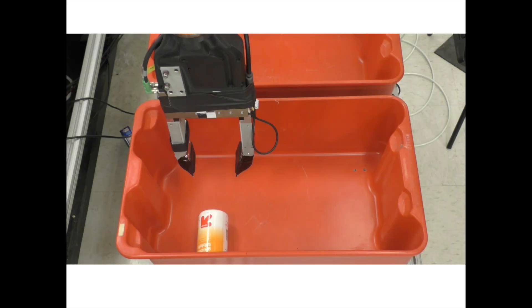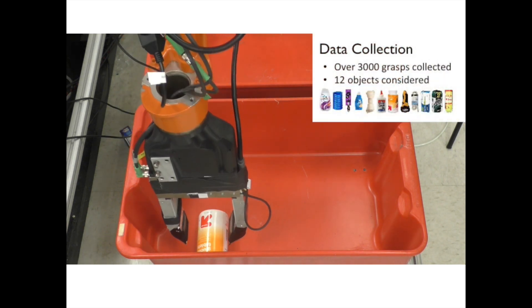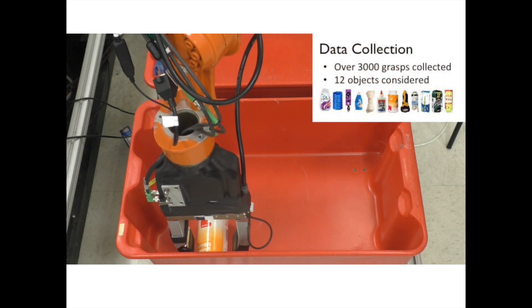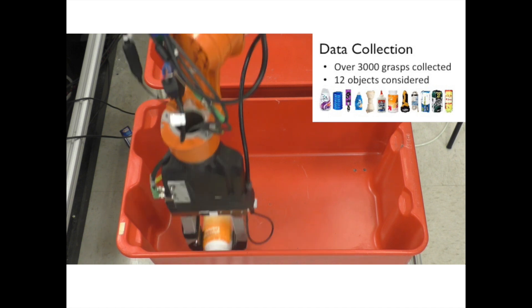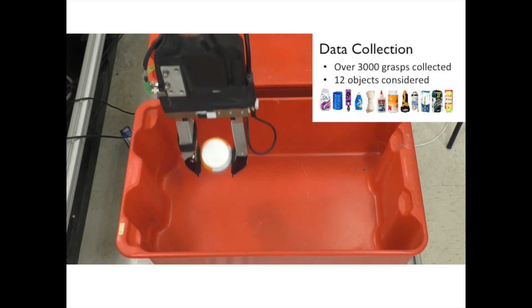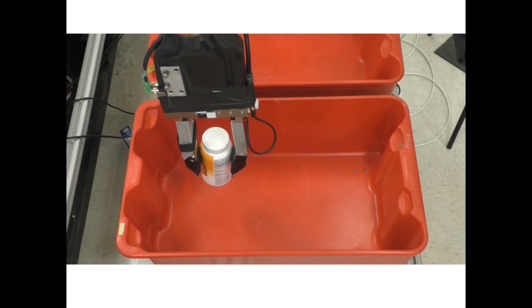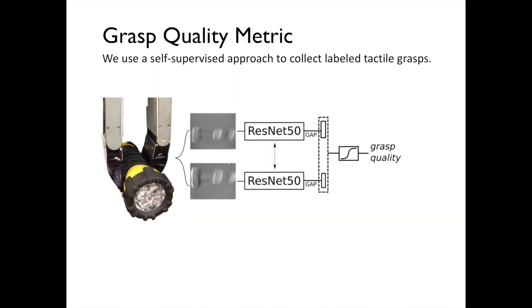We rely on a self-supervised learning approach, where the data is collected from experimental grasps with tactile signatures labeled with their grasp quality. We perform over 3,000 grasps on 12 different objects. The collected data is used to estimate the stability of a given grasp based on the tactile imprint.